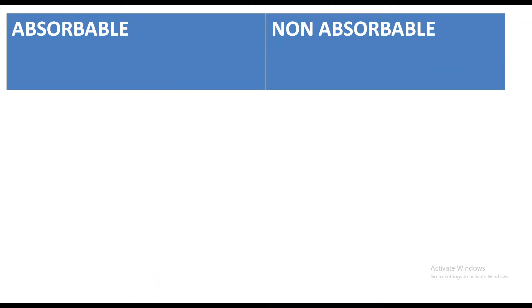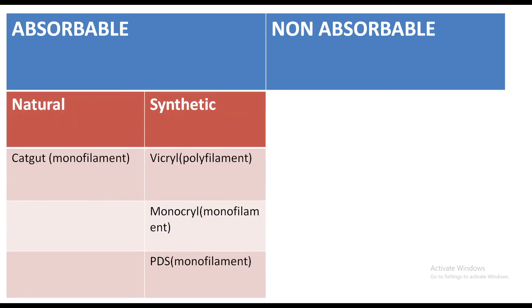There is another classification in which sutures are classified as absorbable and non-absorbable. Absorbable natural is catgut, which is monofilament. Absorbable synthetic examples are: Vicryl, which is polyfilament; Monocryl, which is monofilament; and PDS, which is also monofilament.